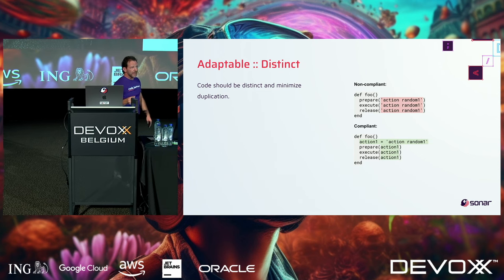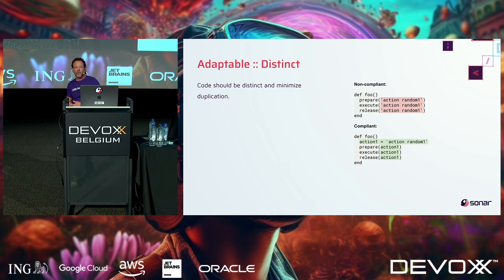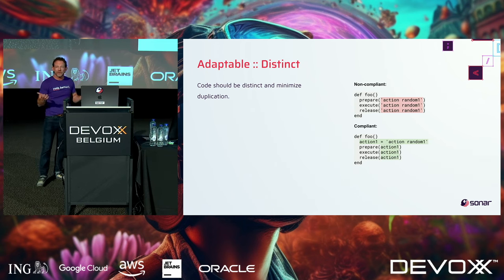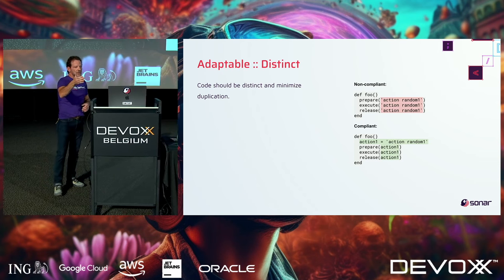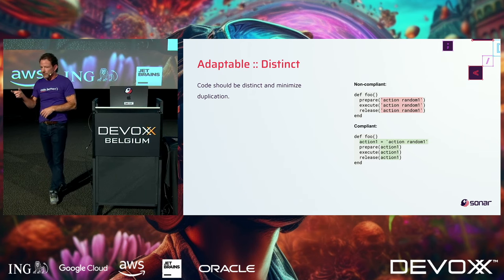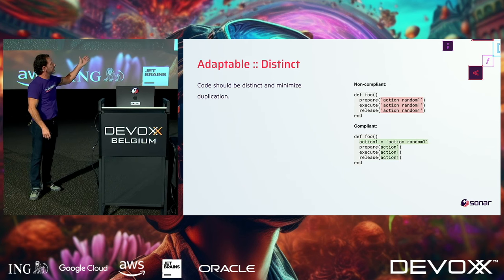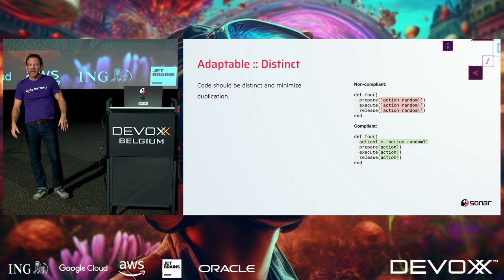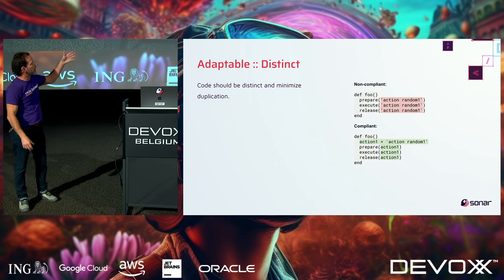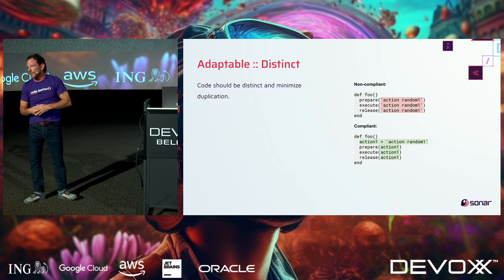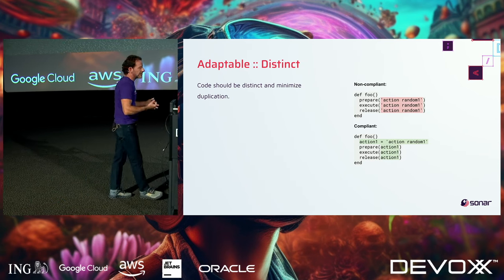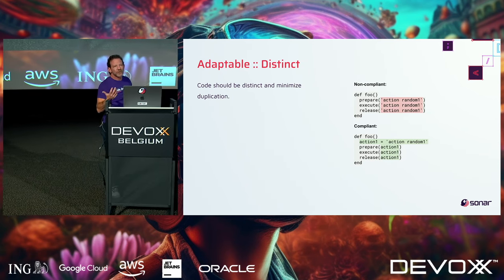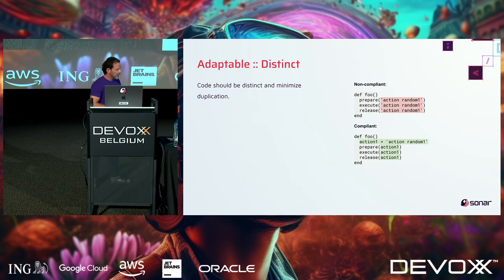Clean code is also adaptable, and part of that is being distinct. Here you see prepare, execute, and release with hard-coded static strings. Not a big issue in five lines, but imagine 20 lines of code between prepare, execute, and release — when you start refactoring and changing a string, you have to find all the places it appears. We know this issue, but it's very important. The solution: create a variable and then use that variable, so it's distinct.